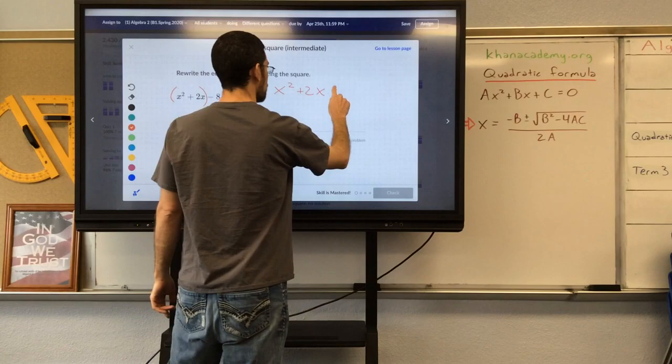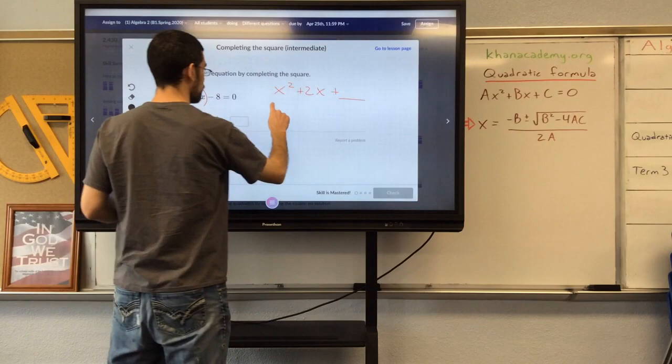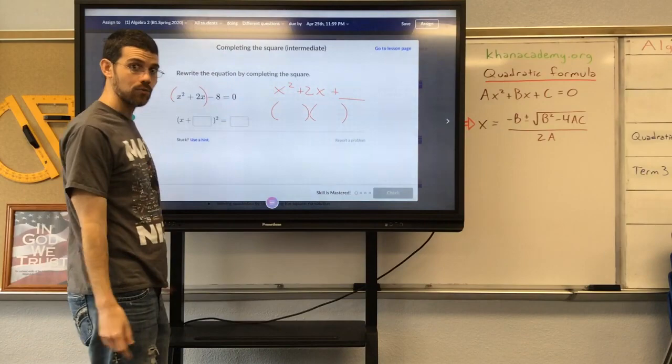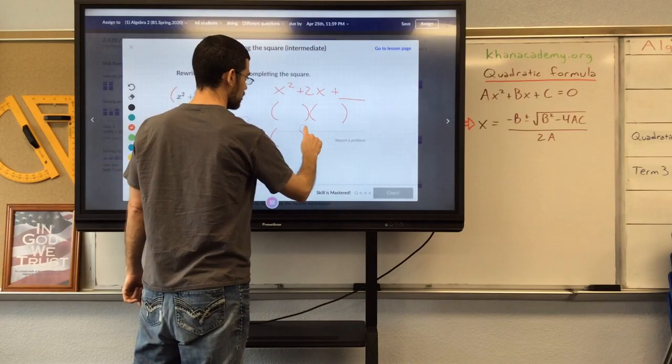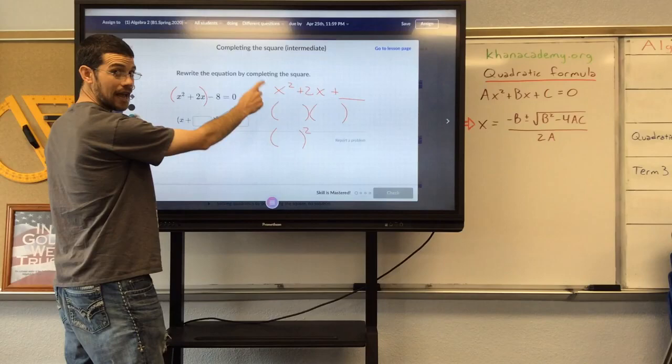x squared plus 2x plus some constant is going to be equal to two binomials that we multiply by each other. In fact, they're going to be equal to a single binomial. These are going to be the same expression. So we can write that as that expression squared.